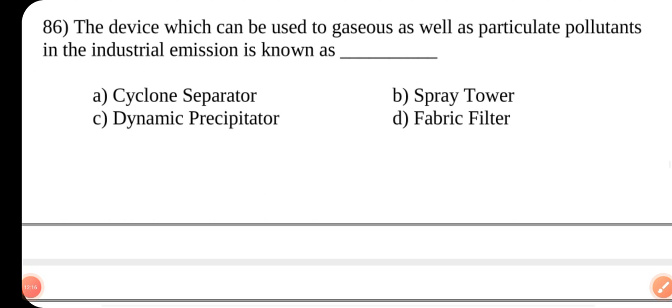Question number 86. The device which can be used to gaseous as well as particulate pollutants in the industrial emission is known as dash. Answer is B spray tower.